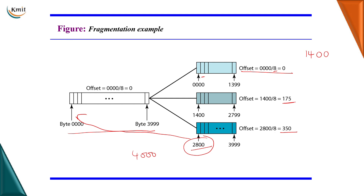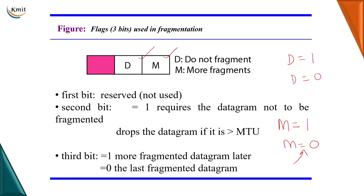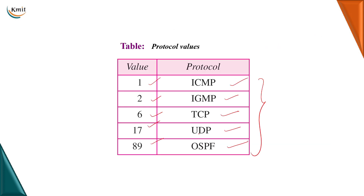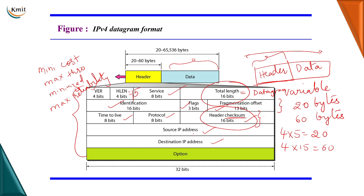All the fields have now been covered: version, header length, service, total length, identification, flag bits, fragmentation offset, time to live, protocol, header checksum, source IP address, and destination IP address.